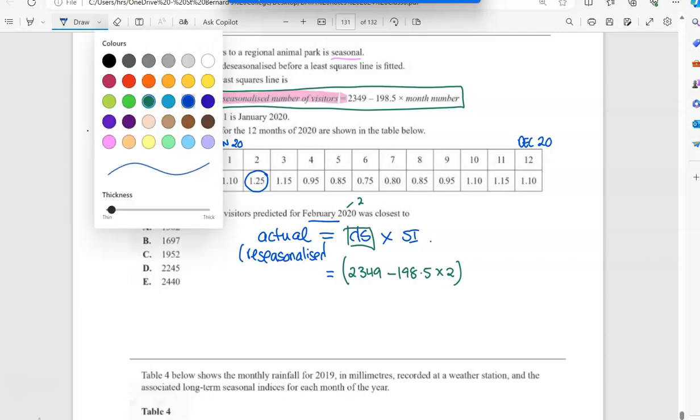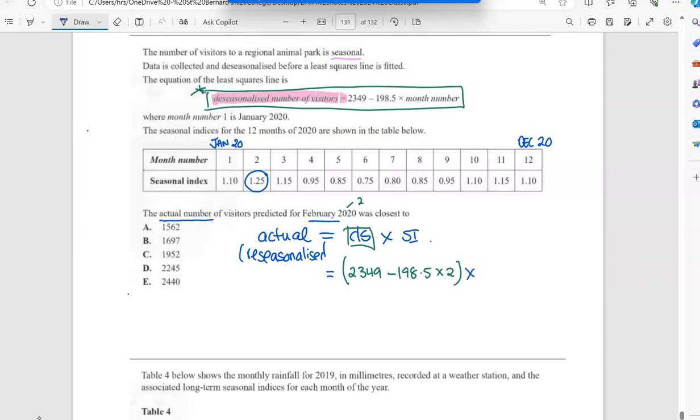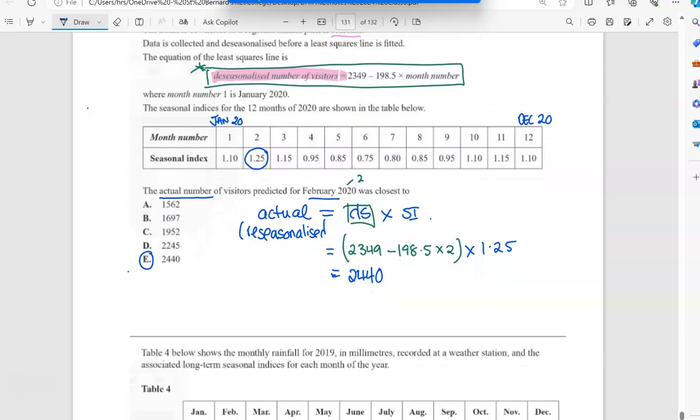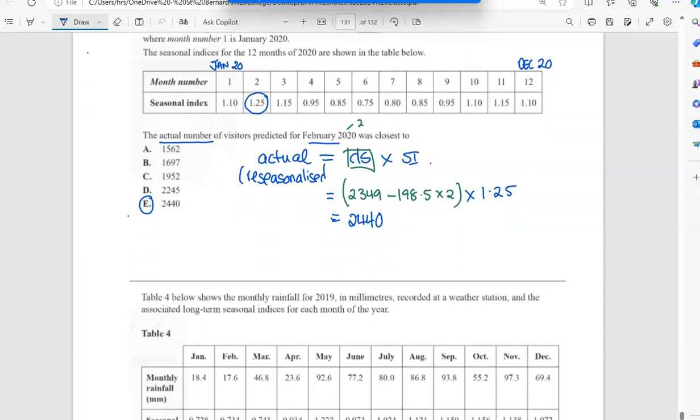So what I'm going to do is use that formula to get the DS value: 2349 minus 198.5 times month two. So I've used this formula here, and then I'm going to times it by the seasonal index which was 1.25. I suggest when you do it in your calculator, pop that de-seasonalized value in brackets and then times your seasonal index outside so that you get the correct answer. So we end up with 2400.